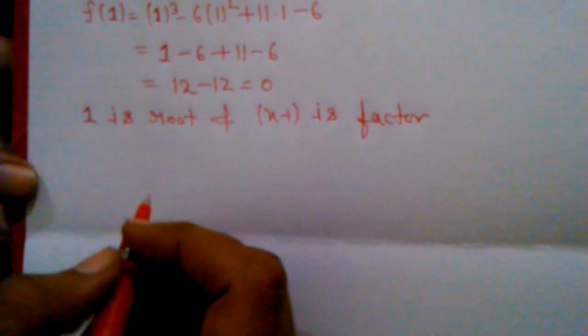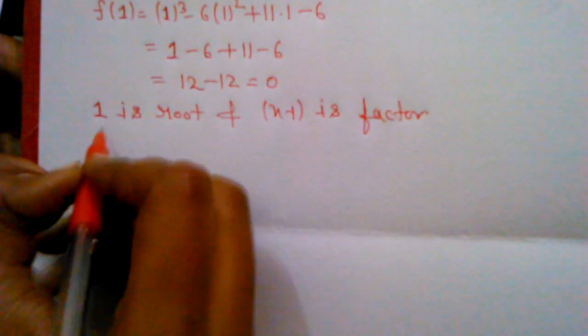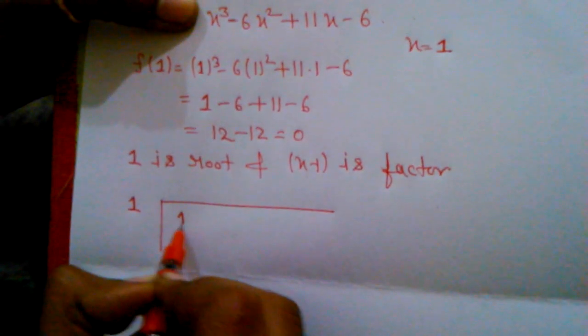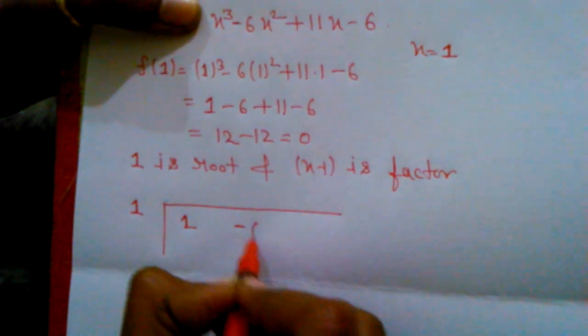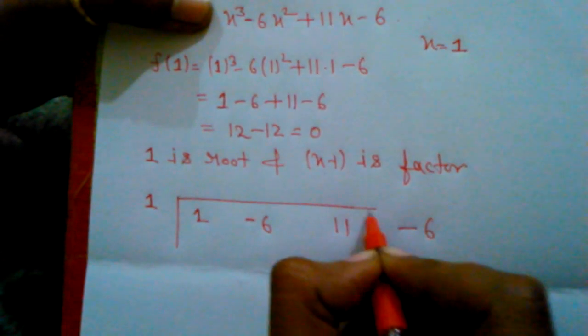Now, friends, for synthetic division, just take the root 1 here and now, write the coefficients: x³ coefficient that is 1, x² coefficient -6, coefficient of x that is 11, and the constant that is -6.